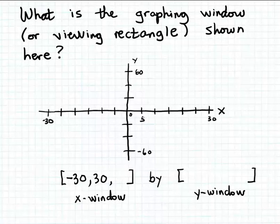This tick mark must indicate 5 on the x-axis, this one 10, this one 15, 20, and then this one is 25, and of course the last one is 30. So that means the scale for our x-window is going to be 5.